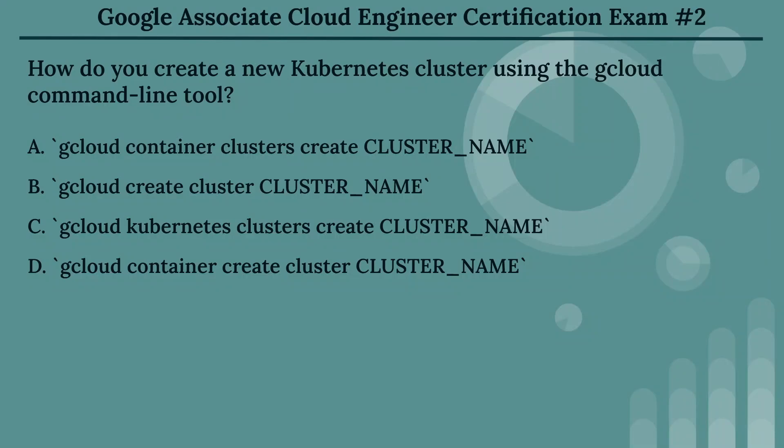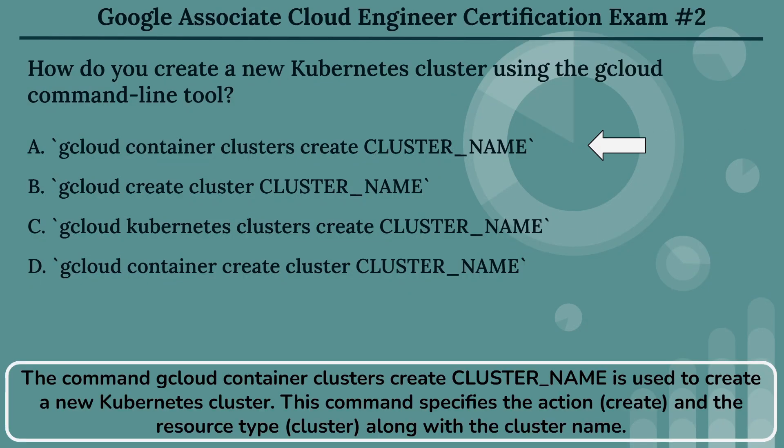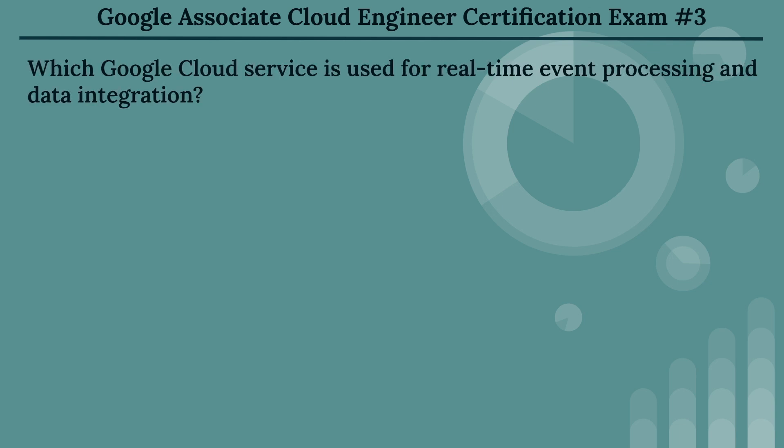The right answer is Option A: gcloud container clusters create cluster_name. The command gcloud container clusters create cluster_name is used to create a new Kubernetes cluster. This command specifies the action, create, and the resource type, cluster, along with the cluster name.